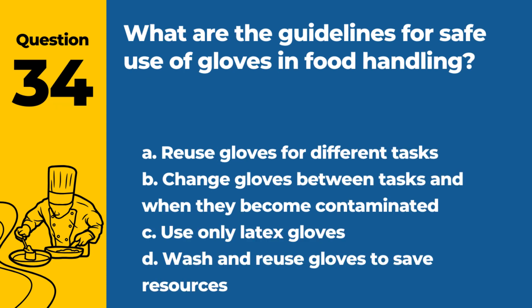Question 34. What are the guidelines for safe use of gloves in food handling? A. Reuse gloves for different tasks. B. Change gloves between tasks and when they become contaminated. C. Use only latex gloves. D. Wash and reuse gloves to save resources. Answer: B. Change gloves between tasks and when they become contaminated. Safe use of gloves in food handling involves changing gloves between tasks and when they become contaminated to prevent cross-contamination.